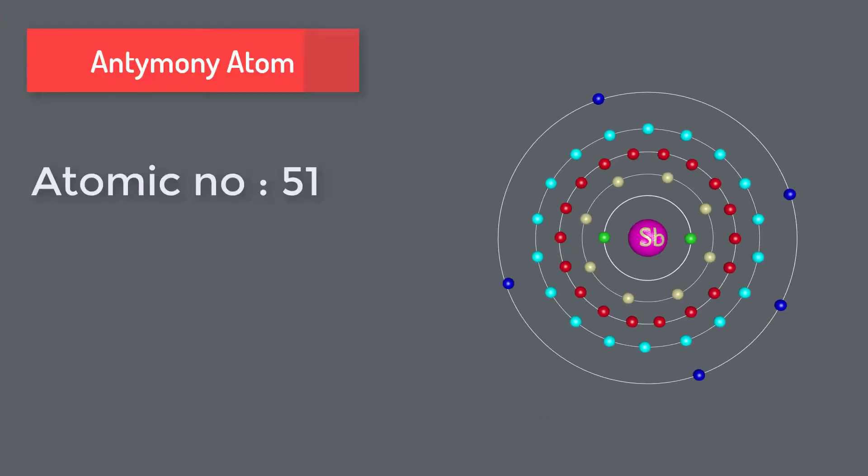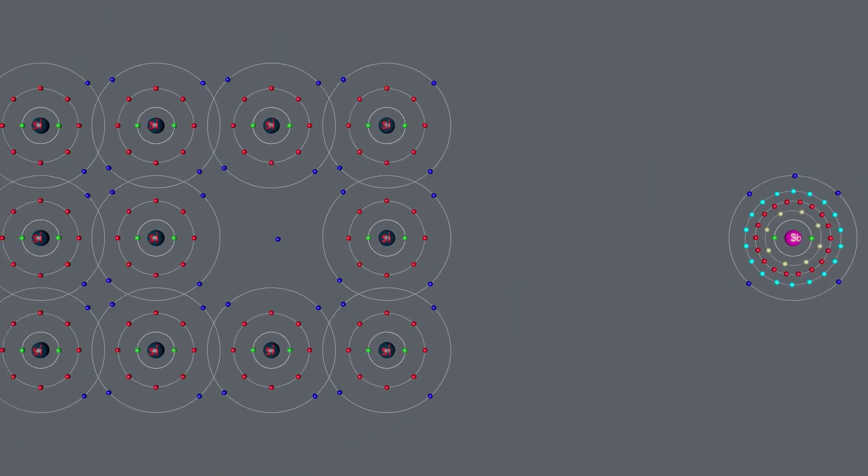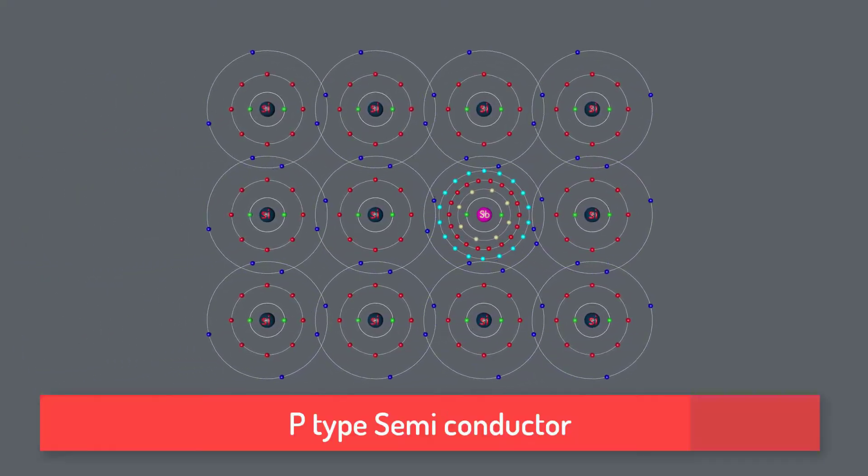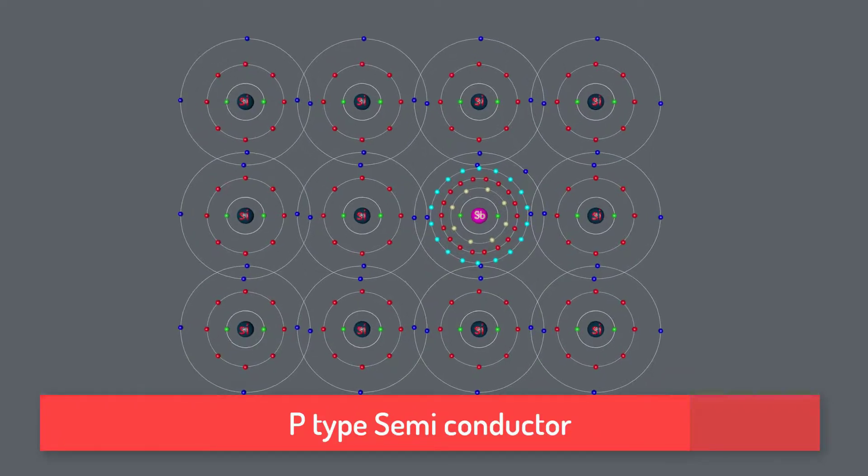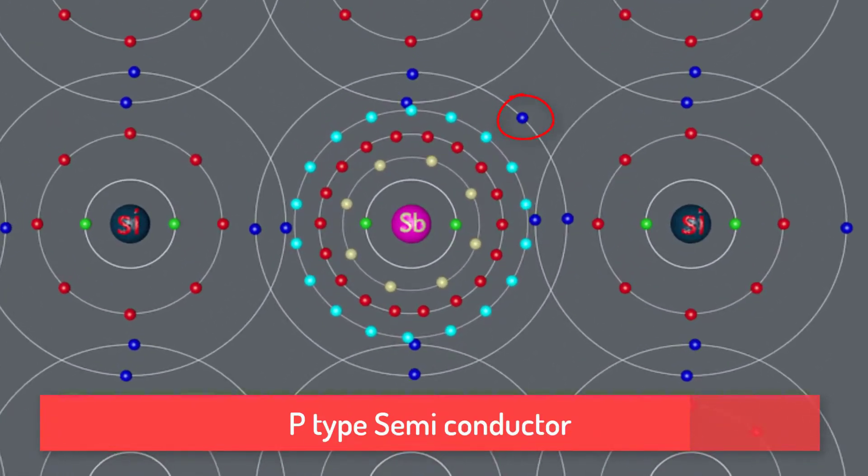Antimony atom has atomic number 51 and 5 electrons in their outer shell. Antimony atom doping with silicon atoms forms N-type semiconductor. One electron is in their outer shell. This freely moves.